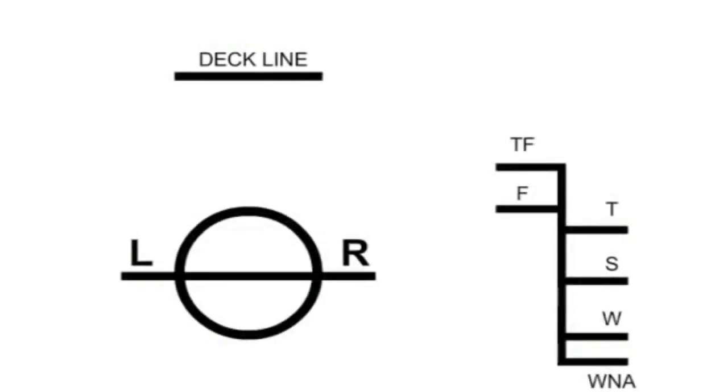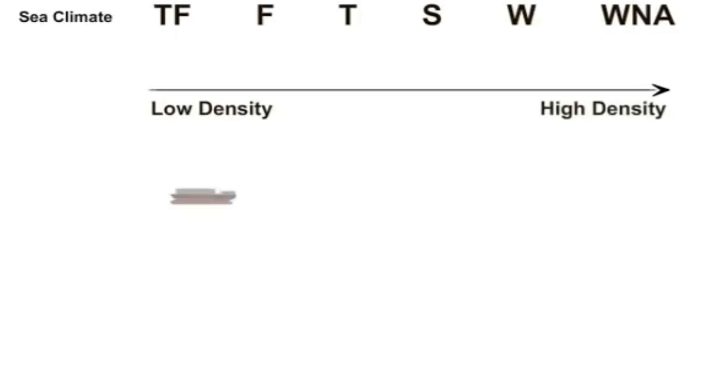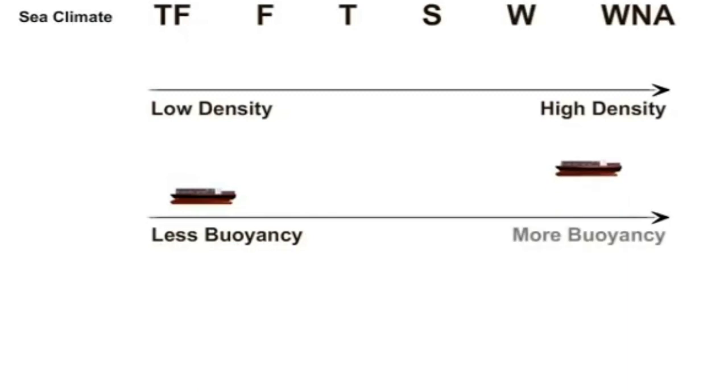There are many load line marks for different density of water or different sea climates. It is important to know that higher the density of water, stronger is the upward buoyant force. The order of less dense water to high dense water is as shown. This means one can load more cargo for dense water.